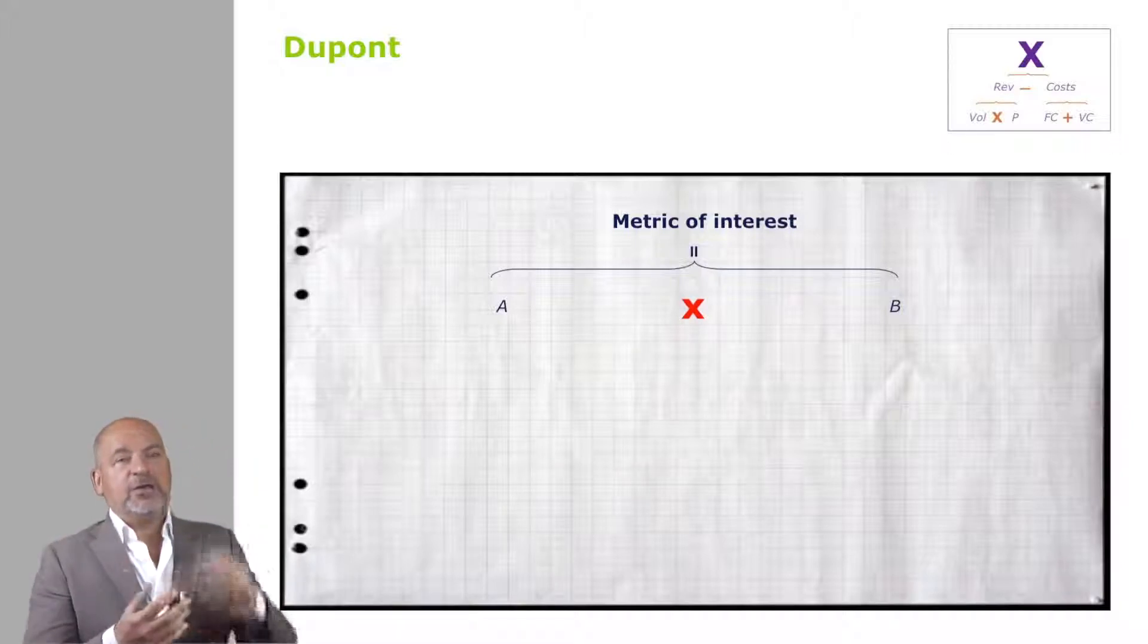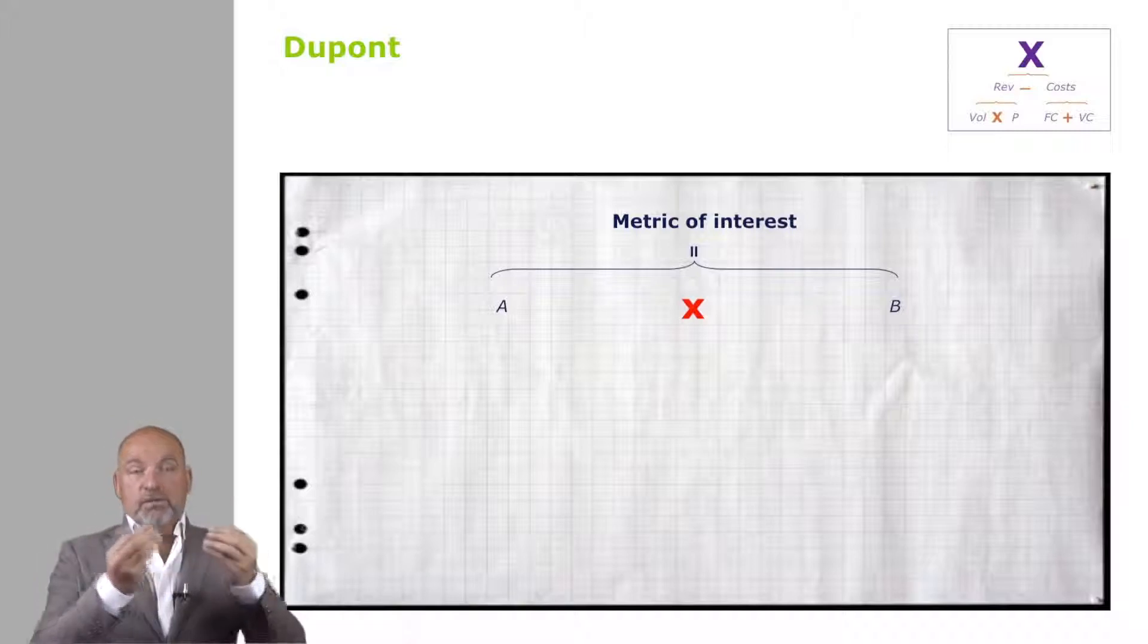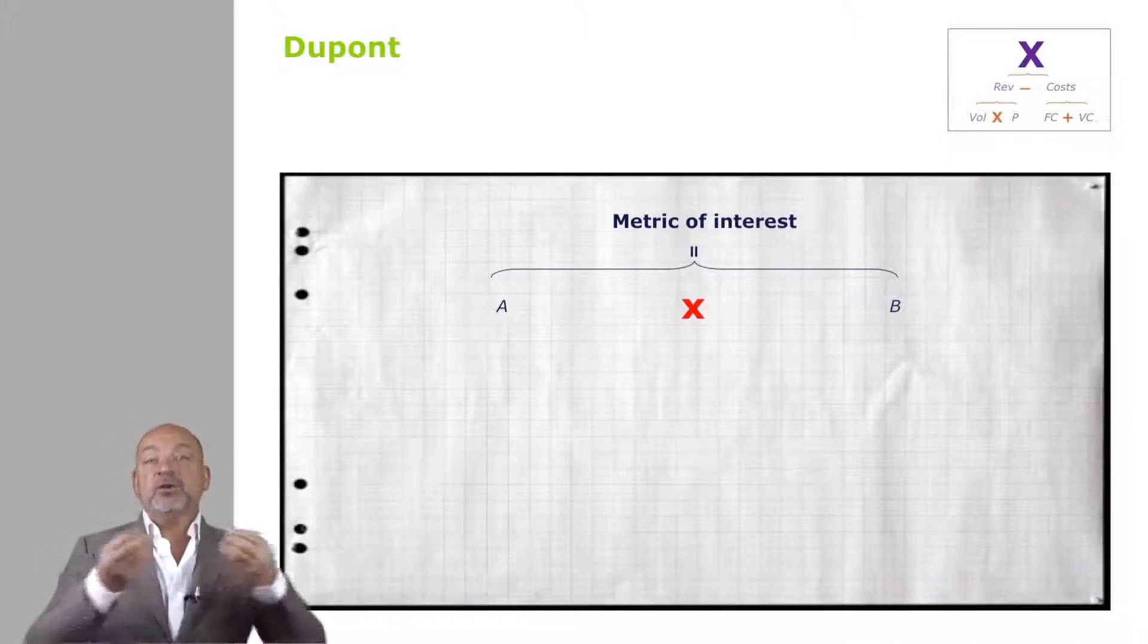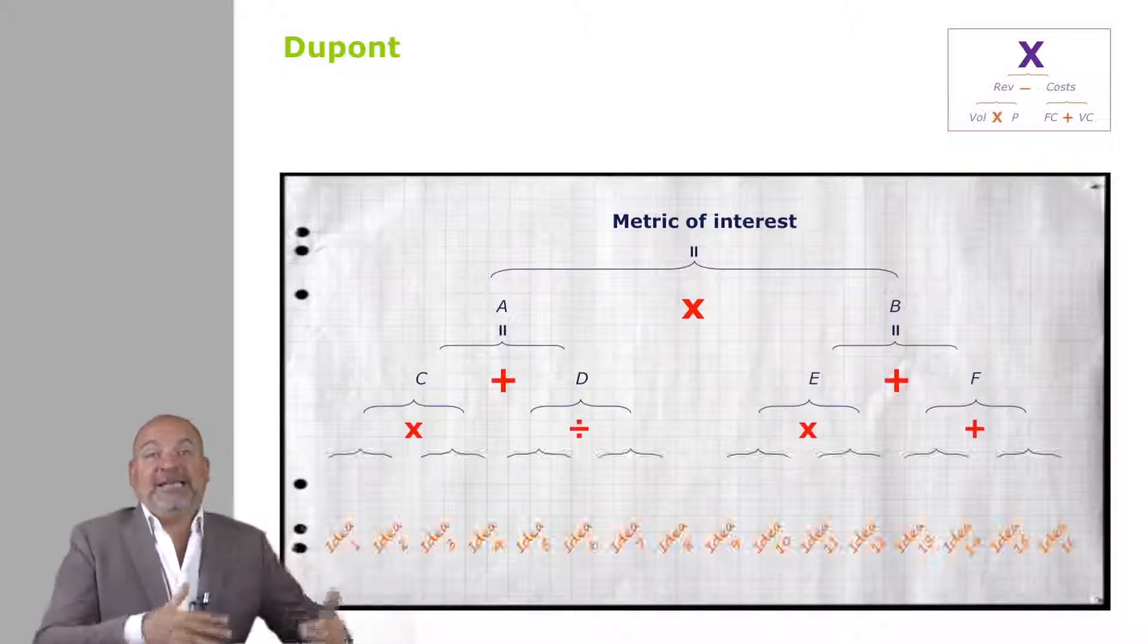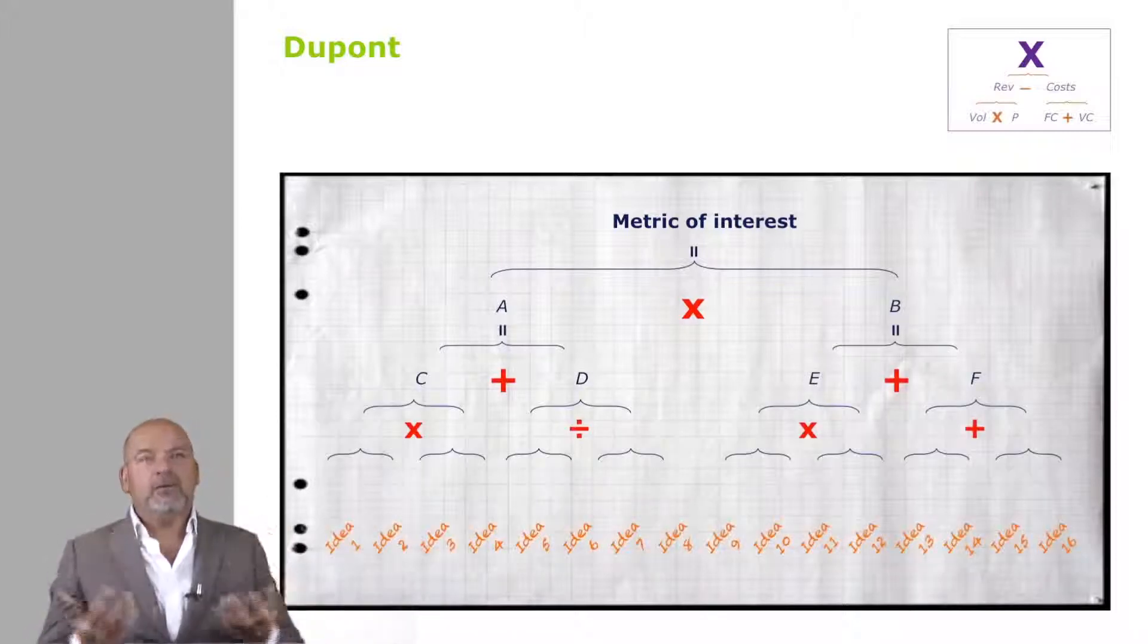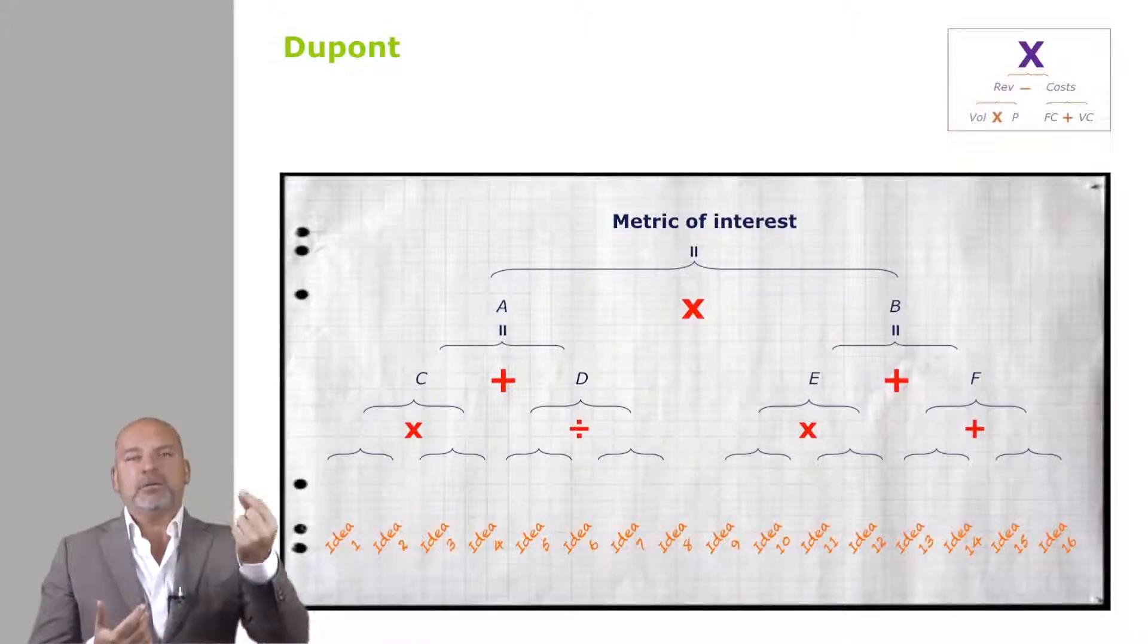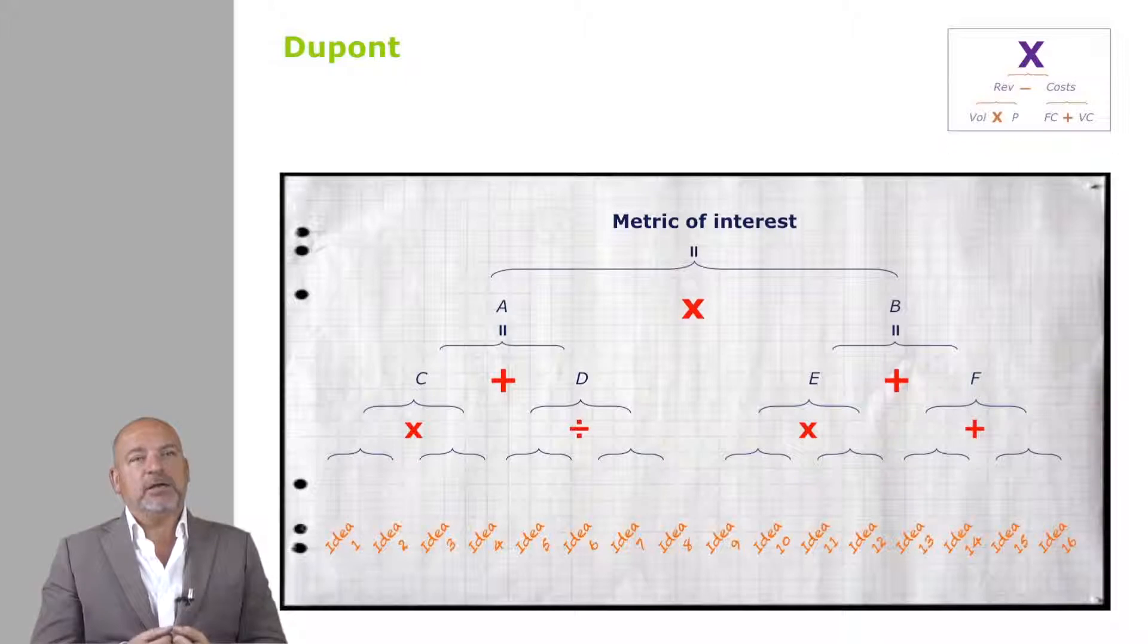And then we'll see how you take the metric, you structure a tree under it, structure a DuPont under it, and very quickly you can arrive at 2, 4, 8, 16 generic solutions to maximize, whether it's up or down, the particular metric you're in charge of. Let's have a look at DuPont in practice.